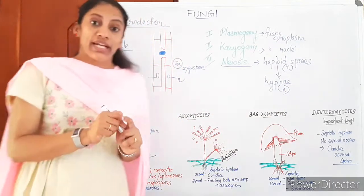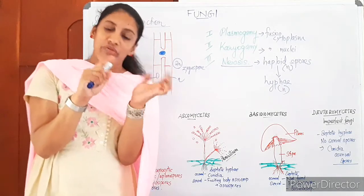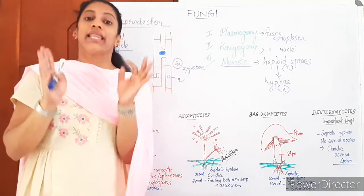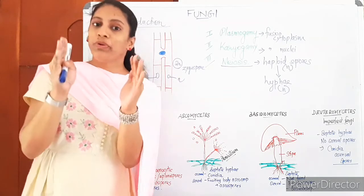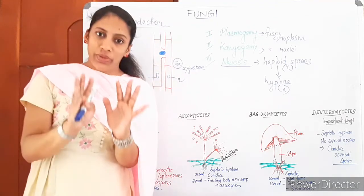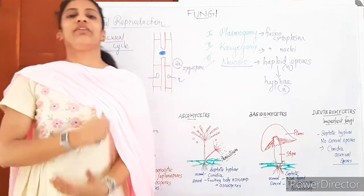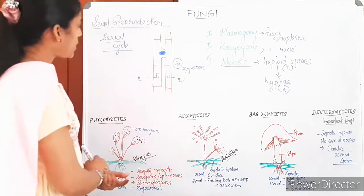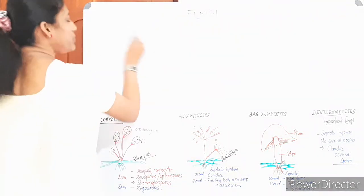This is the sexual cycle of fungus. Two fungal hyphae come closer; first the cytoplasm fuses (plasmogamy), then the nuclei fuse (karyogamy), resulting in a diploid zygospore. It then undergoes meiosis to produce haploid spores, which form new haploid hyphae. These three steps — plasmogamy, karyogamy, and meiosis — are the sexual cycle of fungi. We will elaborate further in a later section.